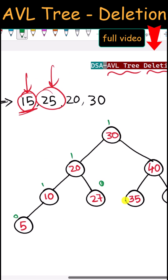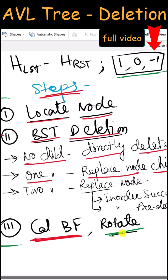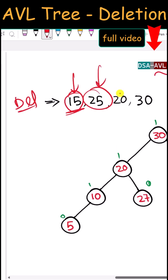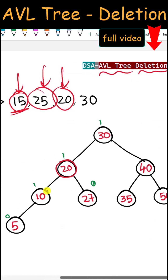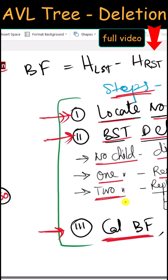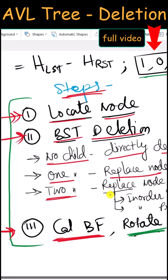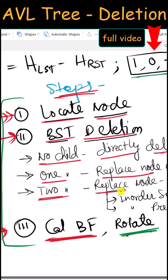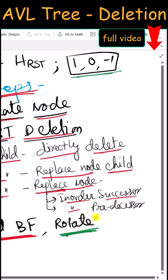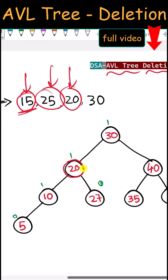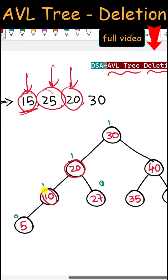After that, we recalculate the balance factor for each node. All nodes are still balanced, so no rotation is needed. Now let's delete node 20. This node has two children, so we can replace it with either the in-order successor or in-order predecessor.